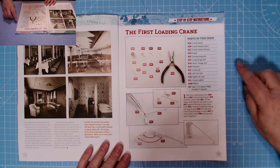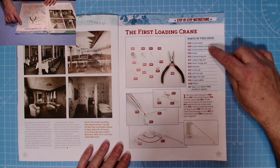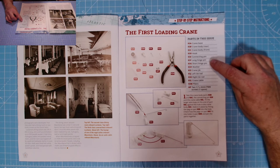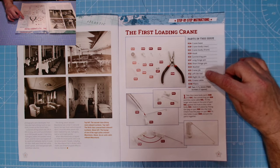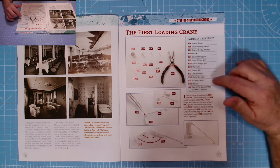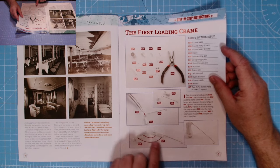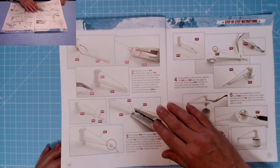And here we have the first loading crane. So we get some small nose pliers, and we get the crane base, crane body rear and front, hook, connecting pin, long hinge pin, short hinge pin, washer, crane jib left tire rod, right tire rod, crane cable, and HP screws too.